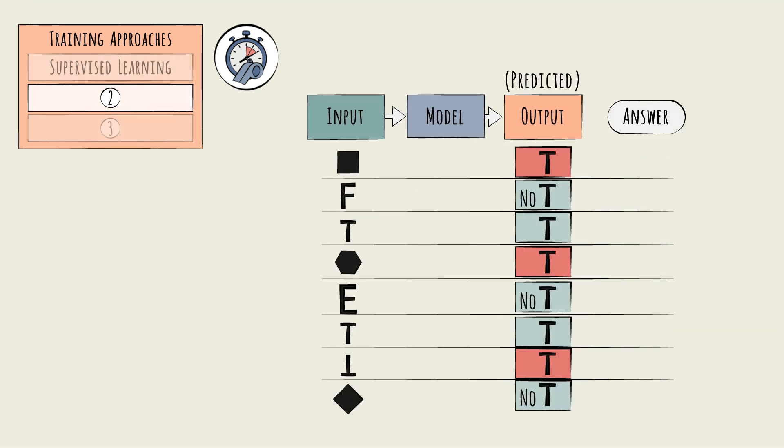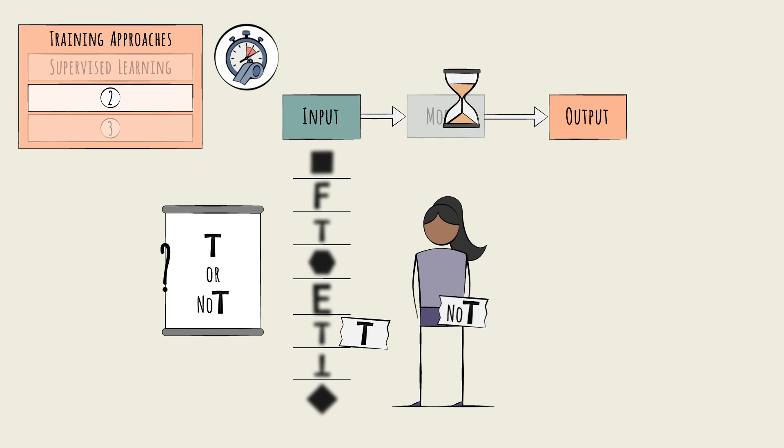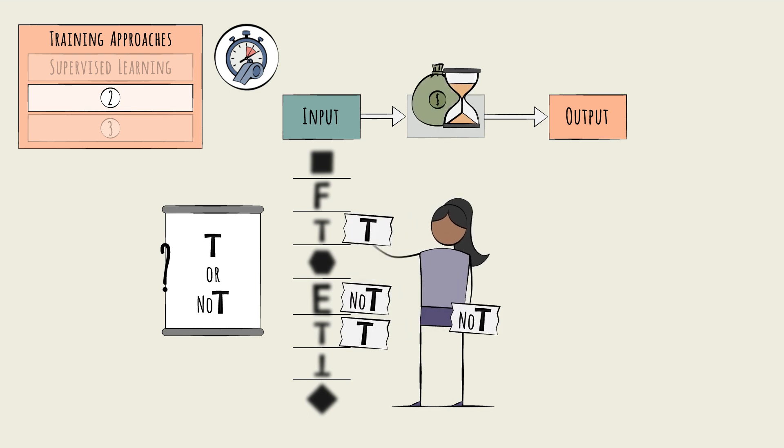Sometimes, however, we don't know the true output for each entry in the training data, and we will need to use the second training approach. Say we have sample images, but we don't know in advance if they contain the letter T. Labeling this data would be a time-intensive and costly task. Humans would need to review each picture to make a T or no T determination.